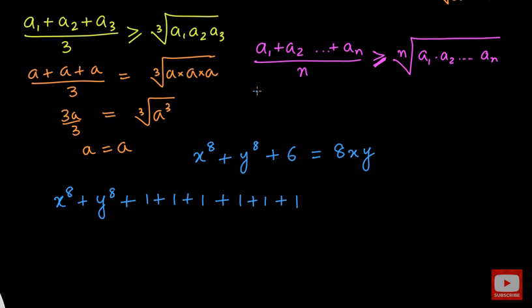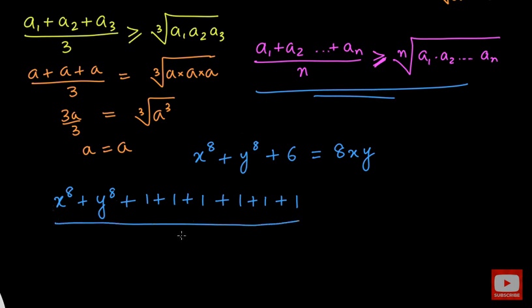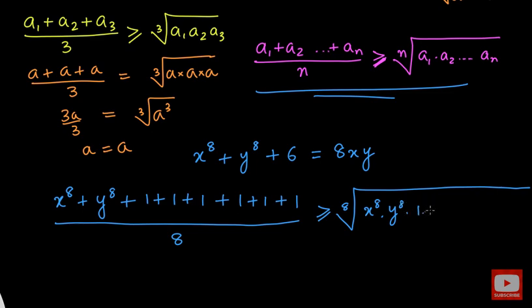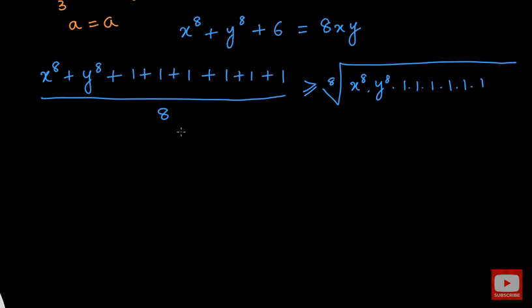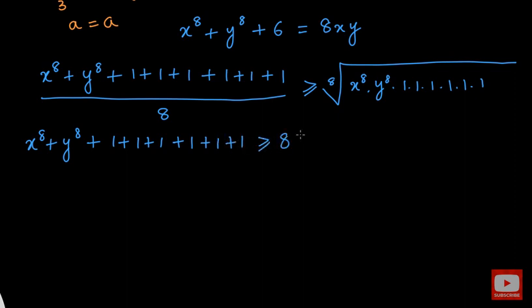We apply the AM-GM inequality: the arithmetic mean is the sum of these numbers divided by the number of entries, that is 8. This is always greater than or equal to the 8th root of the product of all these numbers — that is x to the power 8 times y to the power 8, times 1 times 1 times 1 times 1 times 1 times 1. Rearranging, we get x to the power 8 plus y to the power 8 plus 6 ones is greater than or equal to 8 times the 8th root of x to the power 8 times y to the power 8.